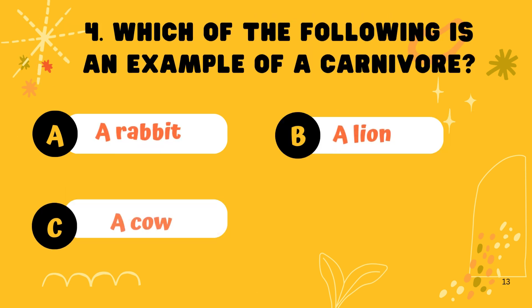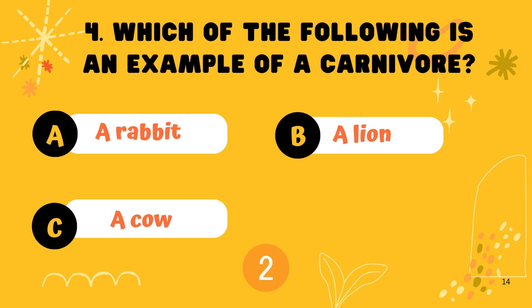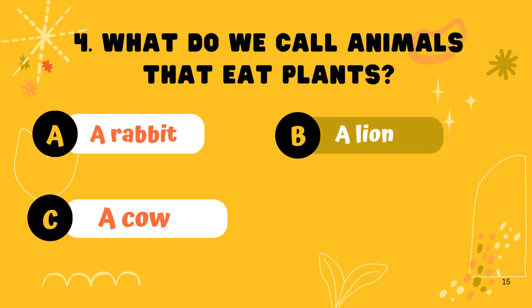Question 4. Which of the following is an example of a carnivore? Option B: A lion.